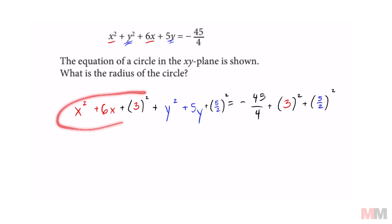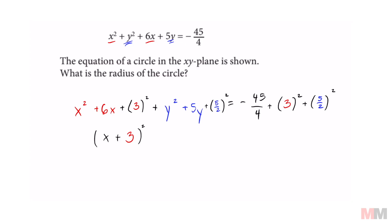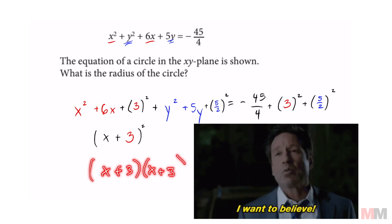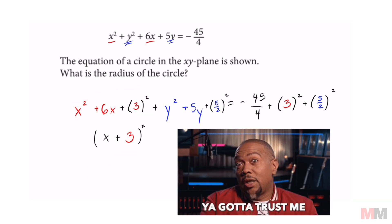Now I can write this as a binomial squared. So that is just going to be x plus whatever you put in this parentheses, 3 squared. And you can test that out if you got trust issues like me. If I multiply those two binomials, I'm going to get this. But don't waste your time. Just take my word for it.